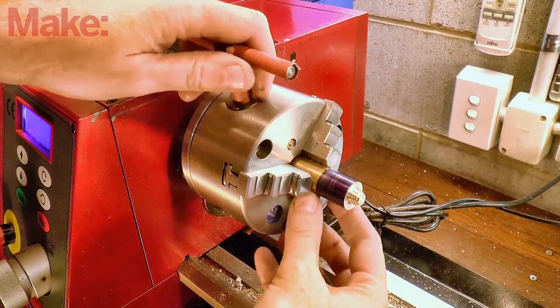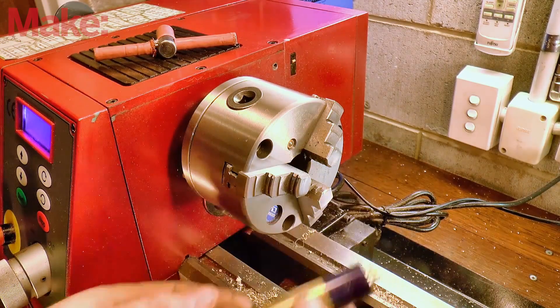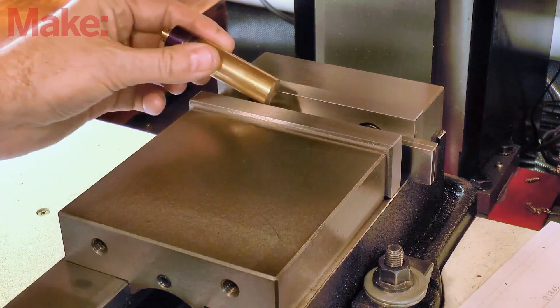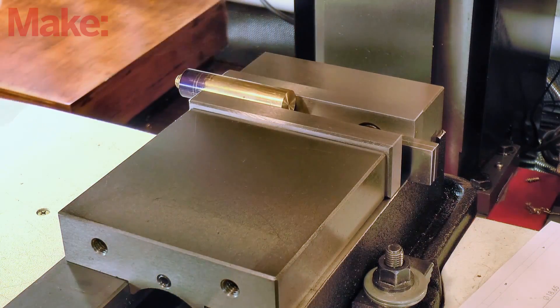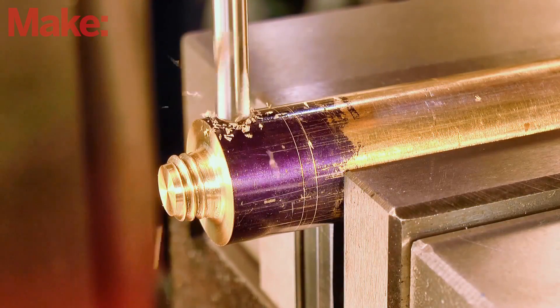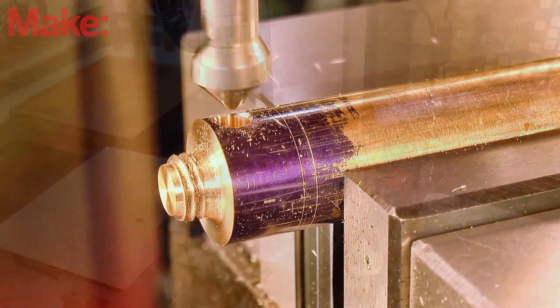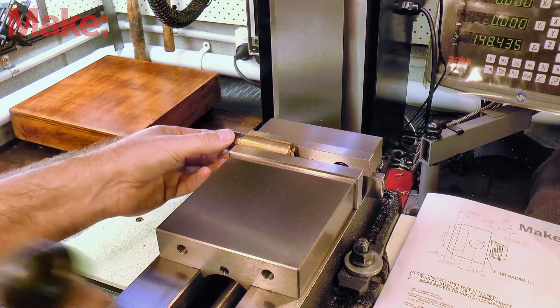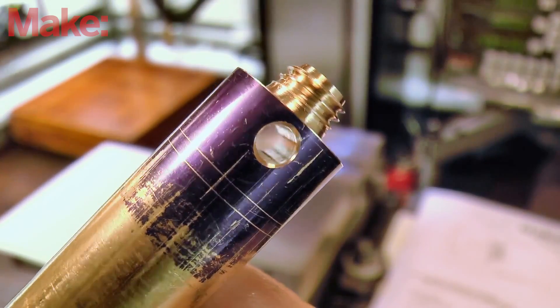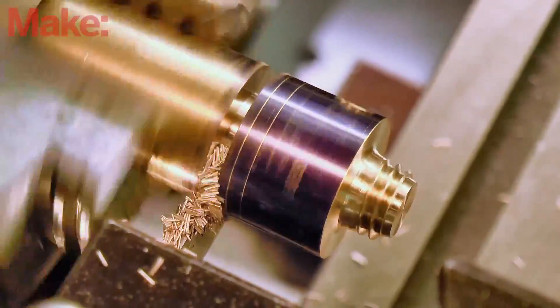A quick tidy up of the end of the thread, and then it's over to the mill to put in that cross hole. And with that cross hole complete, back to the lathe to part off the work.